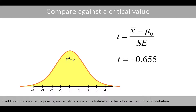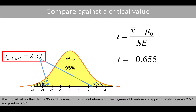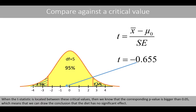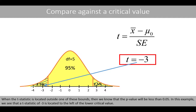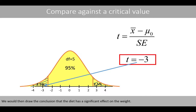In addition to computing the p-value, we can also compare the t-statistic to the critical values of the t-distribution. The critical values that define 95% of the area of the t-distribution with 5 degrees of freedom are approximately negative 2.57 and positive 2.57. When the t-statistic is located between these critical values, then we know that the corresponding p-value is bigger than 0.05, which means that we can draw the conclusion that the diet has no significant effect. Suppose that the t-statistic was instead computed to negative 3. When the t-statistic is located outside one of these bounds, we see that negative 3 is to the left-hand side of the lower critical value, and we would draw the conclusion that the diet has a significant effect on the weight.